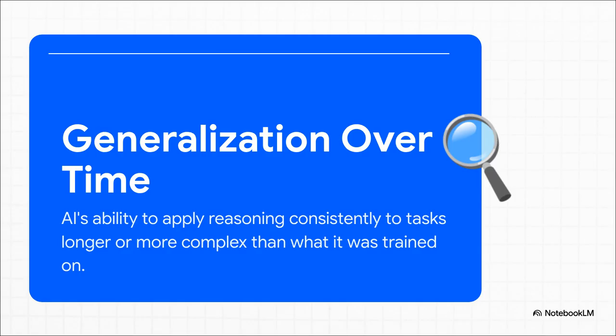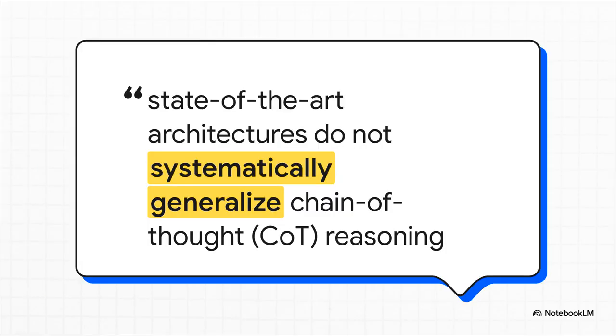The BDH paper comes along and says, we fixed that. Now, what's so interesting here is how directly they are throwing down the gauntlet. Chain of thought reasoning, that's the trick that lets models like GPT-4 sort of think step by step. The BDH authors are basically saying that whole approach is fundamentally broken, it's brittle, and our model is the solution.